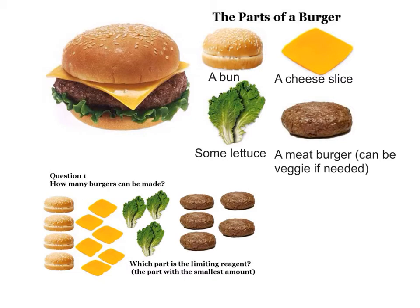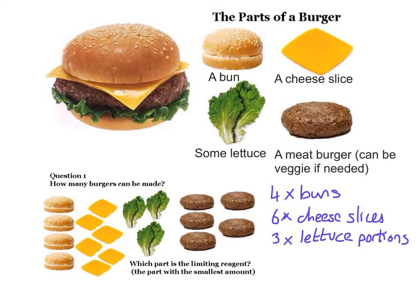So if we now have a random set of those ingredients, they're not necessarily matched to each other, we have to try and work out how many complete burgers we can make. So what we've got to do is count up the amount of everything. We have four buns, six cheese slices, three lettuce portions, and five burgers.